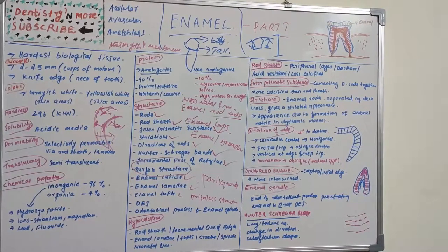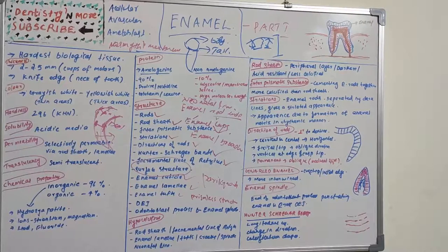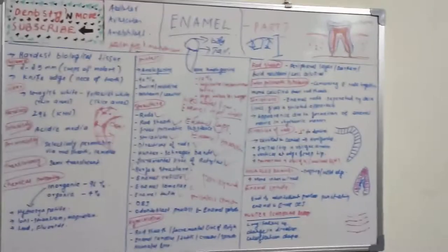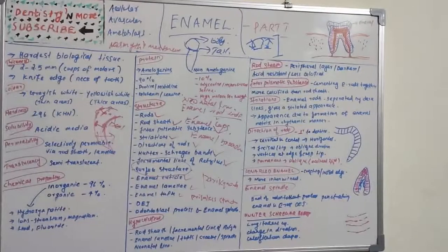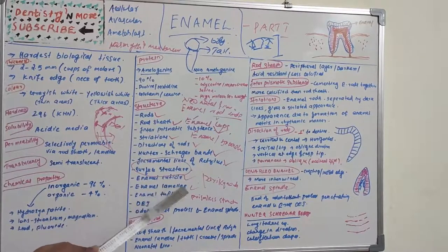The significance of enamel lamellae is that they are sites of weakness in the tooth and may form a route of entry for bacteria, potentially initiating dental caries, because the area is poorly calcified.